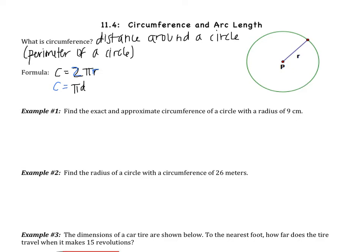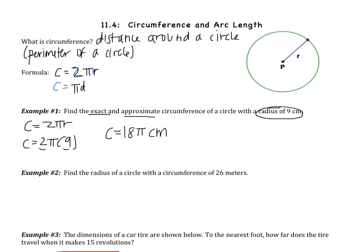Example number one: find the exact and approximate circumference of a circle with a radius of 9. The circumference is 2πr, and we are told the radius is 9. Therefore our circumference is going to be 2π times 9. 2 times 9 is 18, so our circumference is 18π centimeters. Remember that perimeter has the same units as the radius. This is the exact circumference — anytime you leave in pi, that's going to be exact.